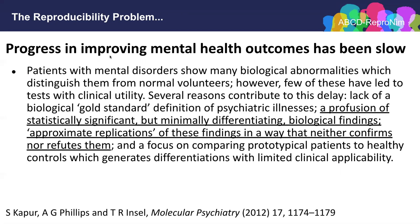Yet to date, we really don't have, in mental health areas, very many significant improvements in the outcomes of people with mental health due to neuroimaging research. A patient seeing their child psychiatrist with autism has about the same outcome today as they did 25 years ago before this large investment in neuroimaging, genetics, and other things. This led Tom Insel and colleagues at the National Institute of Mental Health to lament that we have seen in the psychiatric area at least a profusion of statistically significant but minimally differentiating biological findings, approximate replication of which neither confirms nor refutes them. So in short, while the neuroimaging research enterprise has been great for the publisher and the authors of publications, it has really been less beneficial to the patients they're trying to assist.